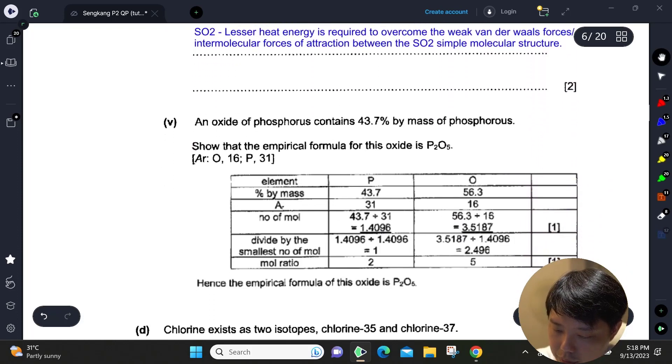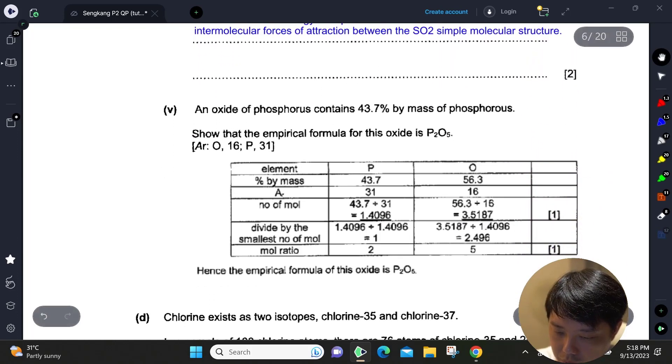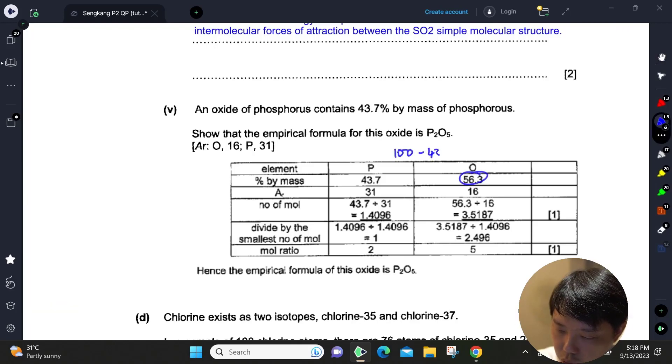The last part for this table: you just need to take the percentage. How to get 56.3%? Just take 100 minus 43.7%, you'll get 56.3%. So you just need to divide this by the atomic mass; you get the number of moles here, and then just divide by the smallest number of moles, which is 1.4096.